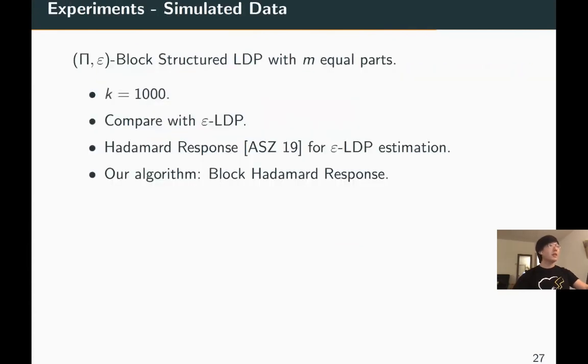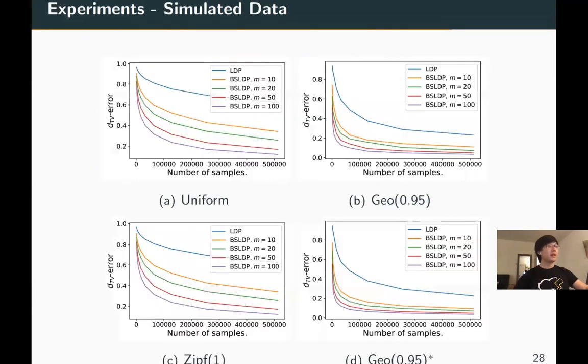We also conduct experiments on both simulated data and real-world data to demonstrate our findings. We focus on the case of block-structured LDP with equal partitions. We compare our algorithms with one of the state-of-the-art algorithms for epsilon-LDP estimation. We can see for different simulated distributions, we get less error under block-structured LDP, and the error gets lower when m increases.